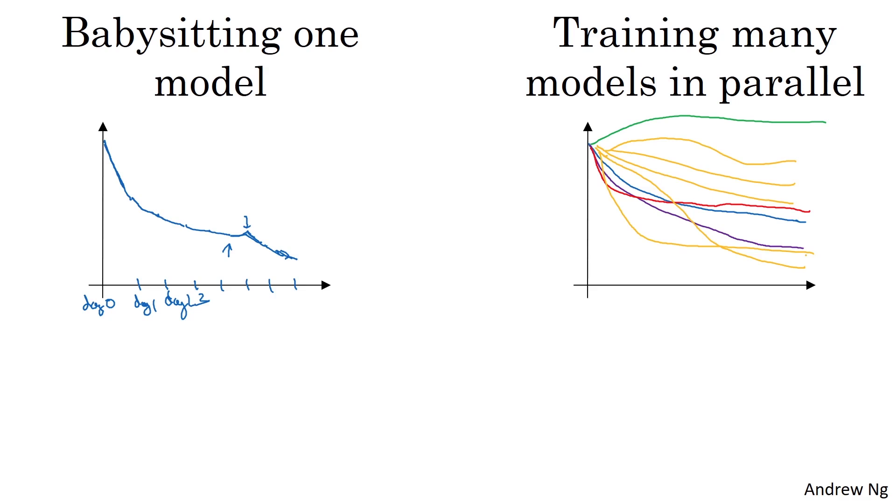And so this way, you can try a lot of different hyperparameter settings and then just maybe quickly at the end, pick the one that works best. Looks like in this example, it was maybe this curve that looked best.